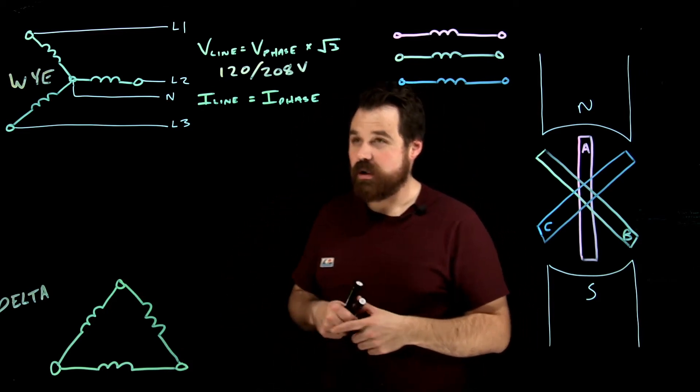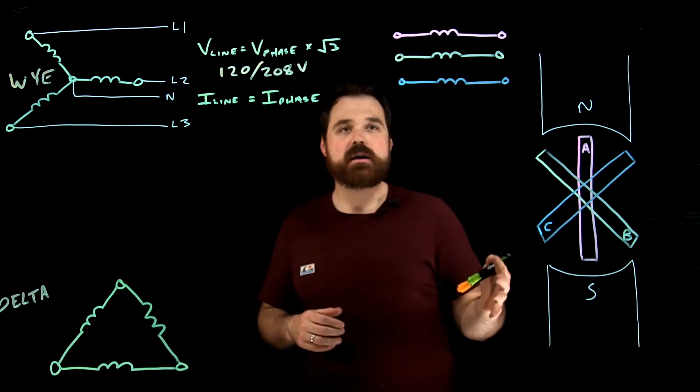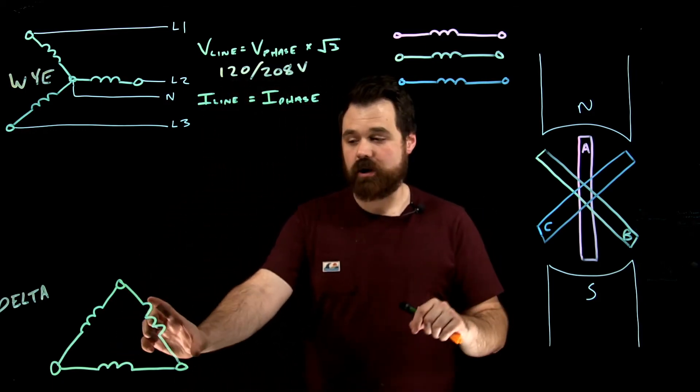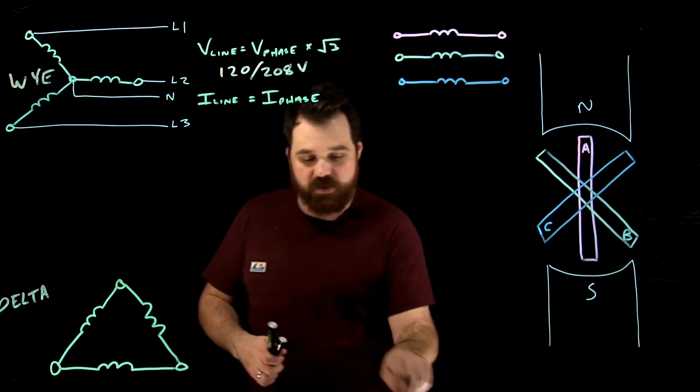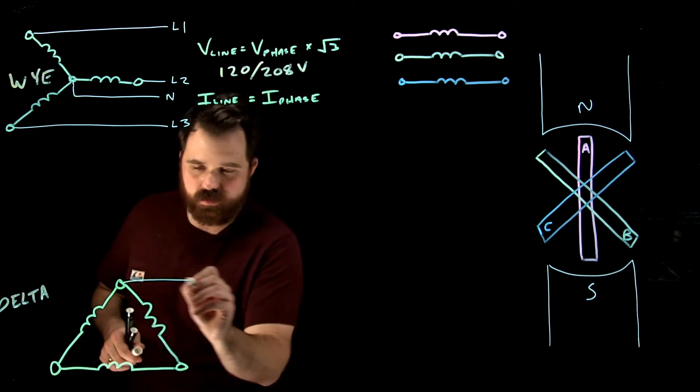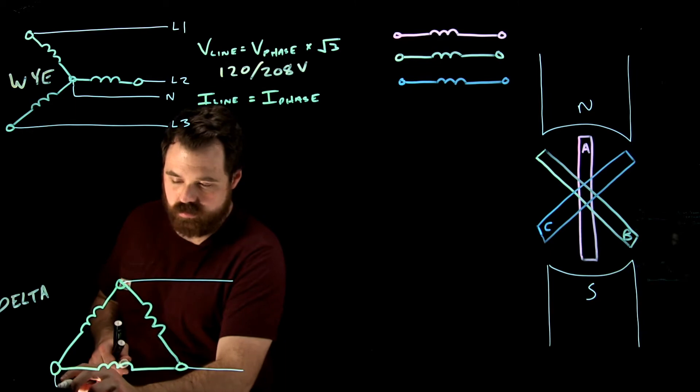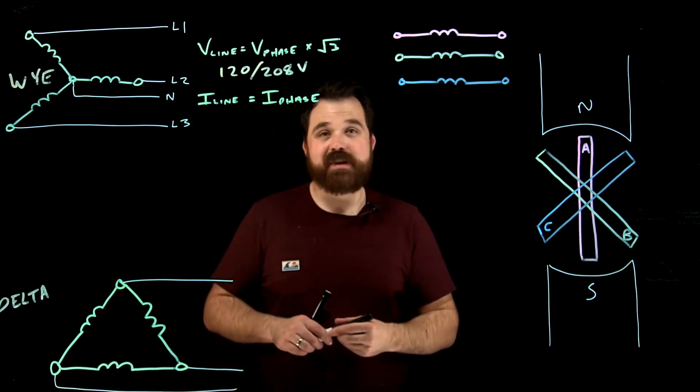Now, what do we see here? Well, what we see here is my phase - remember, I'm generating that 120 volts on the phase, my phase voltage - is my line voltage.